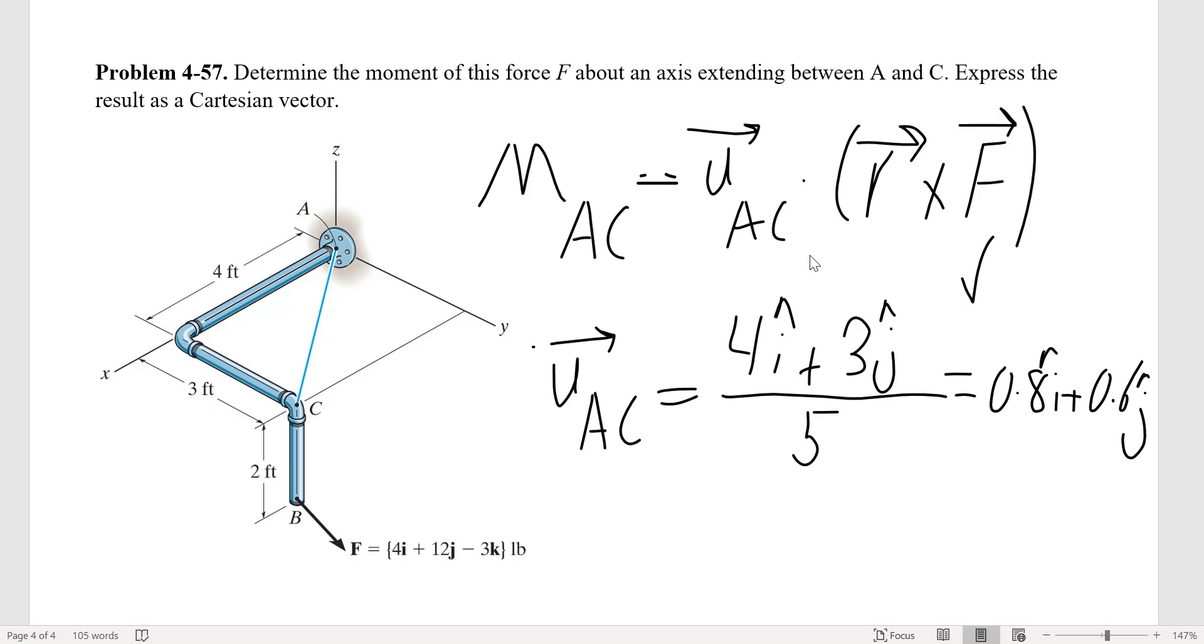We need to find the position vector. For the position vector, we said that it can be from any point on the axis, meaning either A or C, to any point on the line of action of the force F, which would be B.